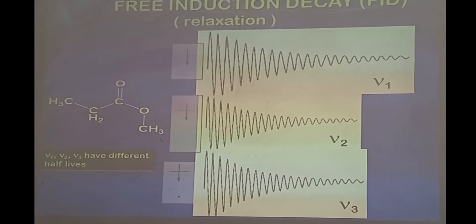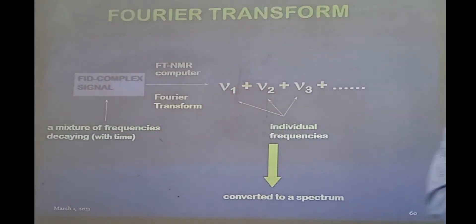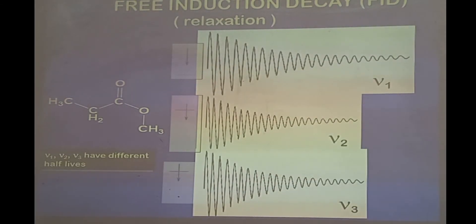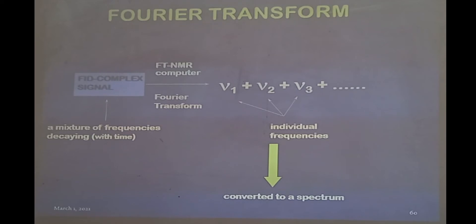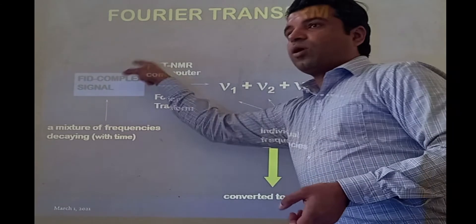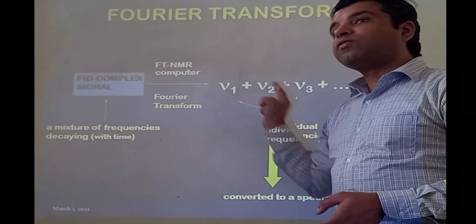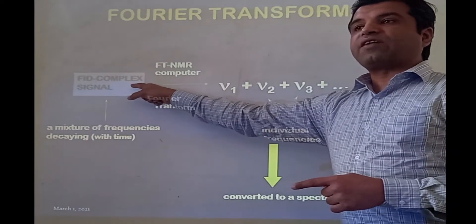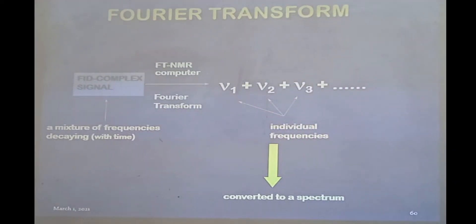That is why we give a certain amount of relaxation delay between two pulses, so as to allow all the nuclei to reach back at the z-axis before we give another pulse. What we have as a result is a complex FID signal — all these FIDs are stacked one upon each other, and that is why we cannot extract more information from it. What Fourier transform does is separate out all the frequencies — we have three frequencies, but in this complex FID we cannot differentiate between them.